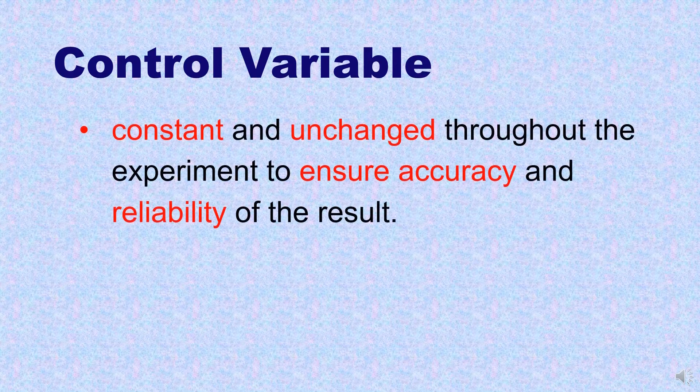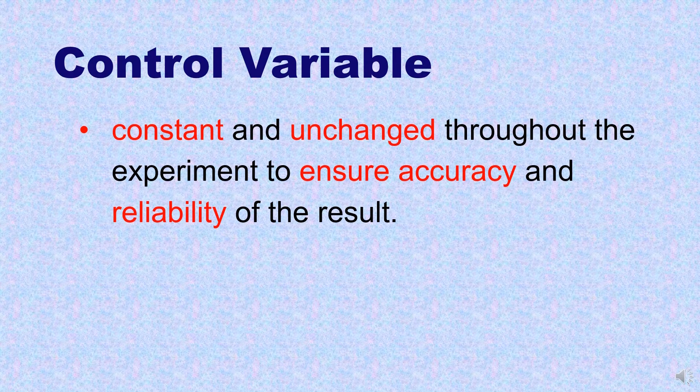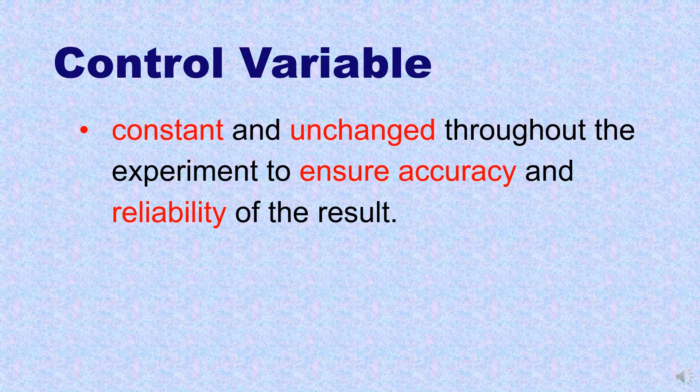Control variable is anything that is held constant and unchanged throughout the experiment to ensure accuracy and reliability of the results. For example,